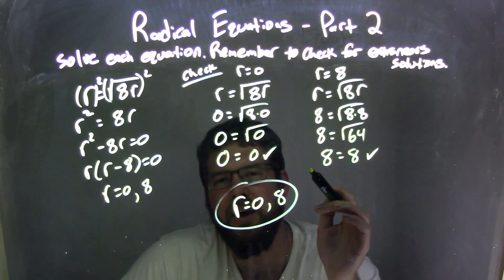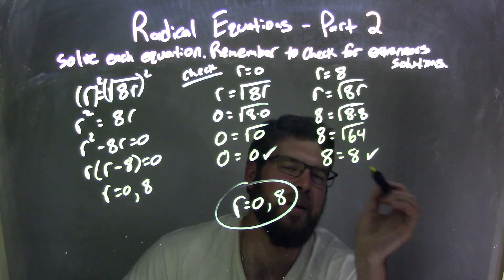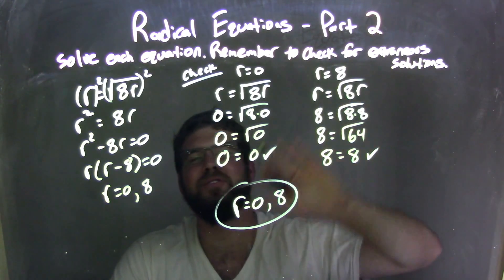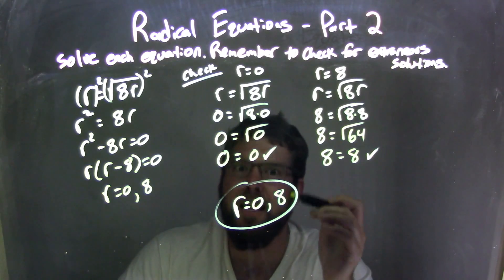Square root of 64 was 8, so left-hand side was 8, right-hand side was 8. Left and right were equal. Fantastic. No extraneous solutions, not in my house here. I had two real solutions.